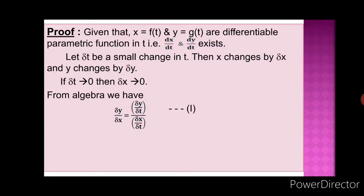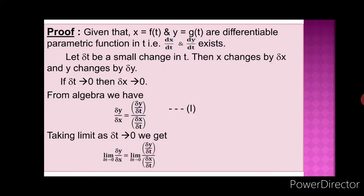Before proceeding, we also take the limit as δt tends to 0. So we have: limit as δt→0 of (δy/δx) equals limit as δt→0 of (δy/δt) in the numerator, divided by (δx/δt) in the denominator.